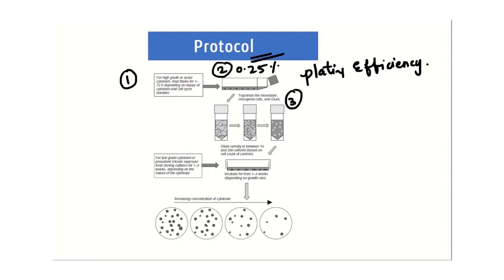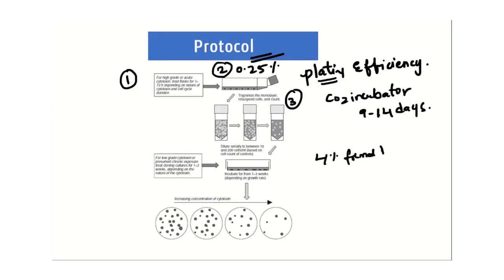In the next step, trypsinization takes place using 0.25% trypsin, followed by serial dilution. After serial dilution, cells are plated according to the plating efficiency. The cells are then incubated in a CO2 incubator for 9 to 14 days and must be observed daily under the microscope to record cell growth.